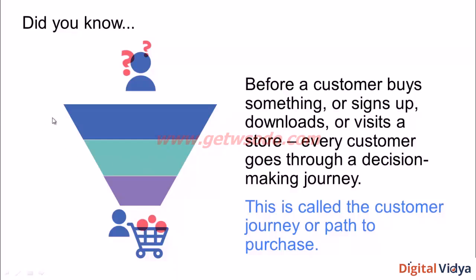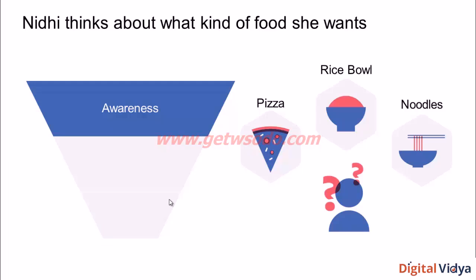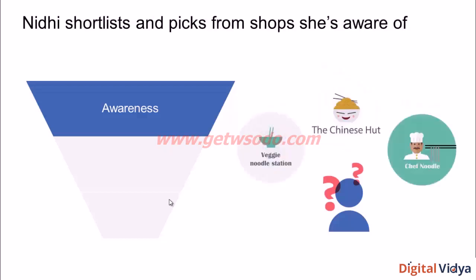This purchase journey is shaped like a funnel, which is why it's called the marketing funnel. Let's understand it with an example: Nidhi wants to get dinner. The first thing she thinks through is what kind of food she wants — pizza, noodles, or rice? She decides she wants noodles — she's in the mood for Chinese food. Next, she thinks through all the Chinese restaurants she's aware of: Veggie Noodle Station, Chinese Hut, Chef Noodle. Which one does she pick? These are restaurants that have built awareness and top-of-mind recall. She's aware of them and now needs to choose.